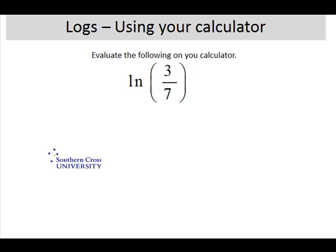This time we're using natural log, but the number is presented as a fraction. So there's actually two ways to do this. We can enter the fraction as 3 divided by 7, or we can use the fraction key and enter it that way. So what I'll do is draw the picture. There's a fraction key on the calculator that looks a bit like that.